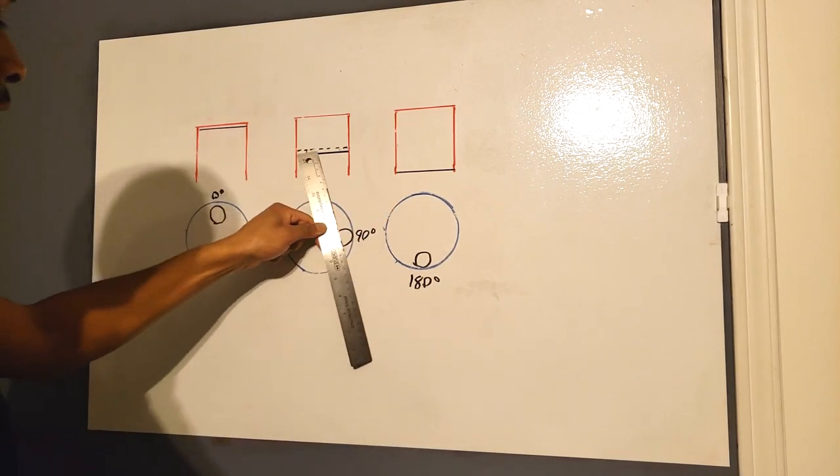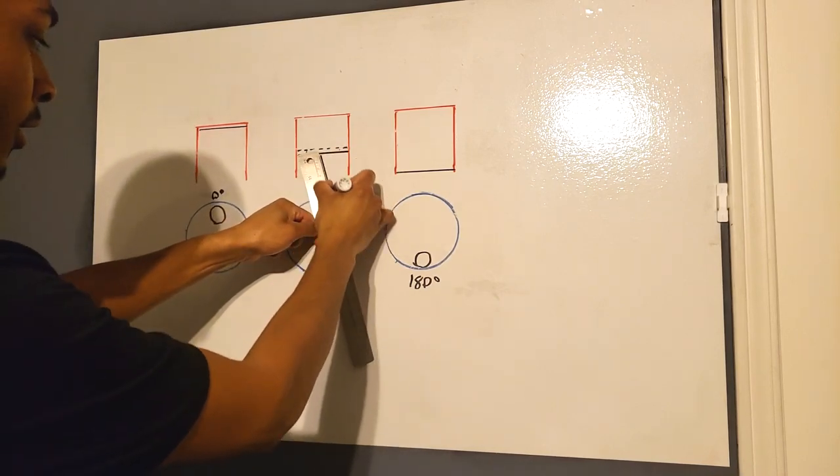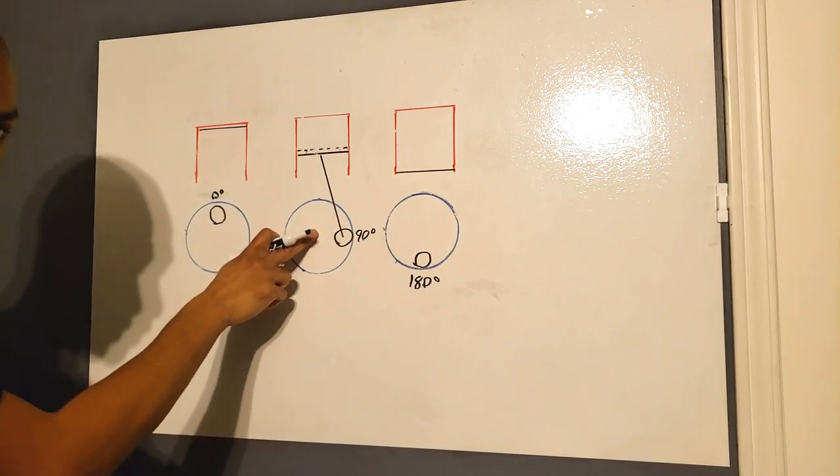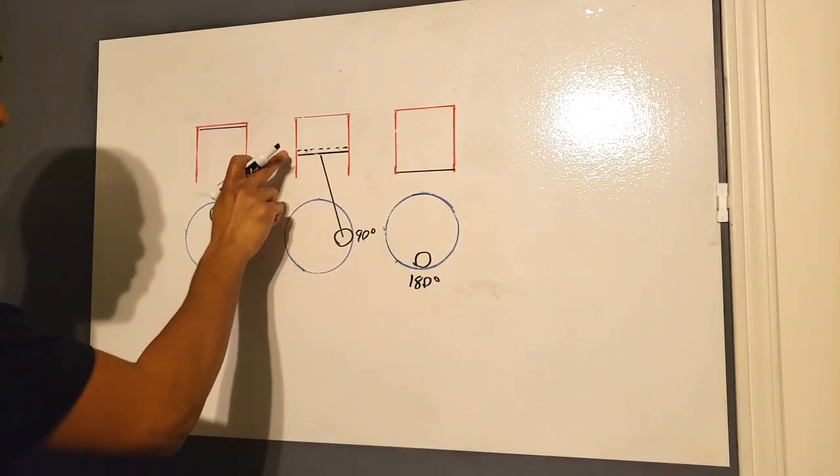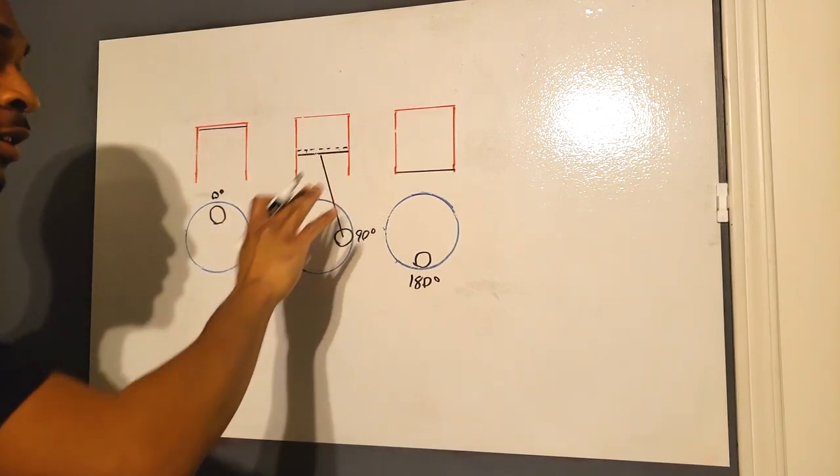Think about it this way. Your connecting rod is actually at an angle here. So if your rod was straight, the piston would be right dead in the middle of the cylinder. But it's not.